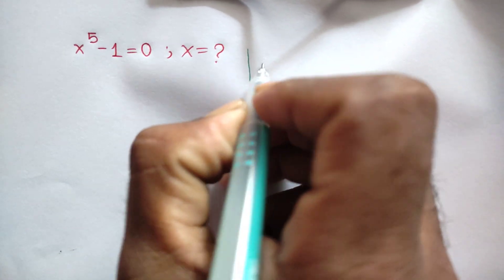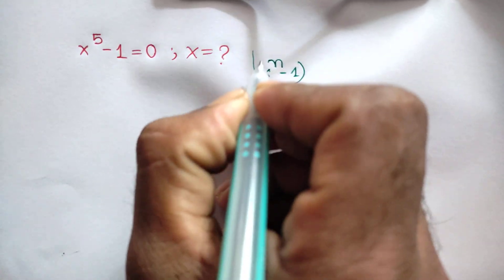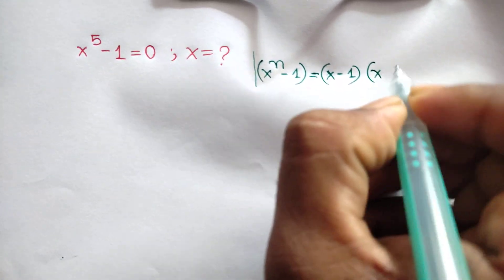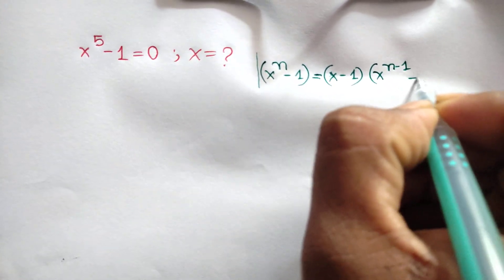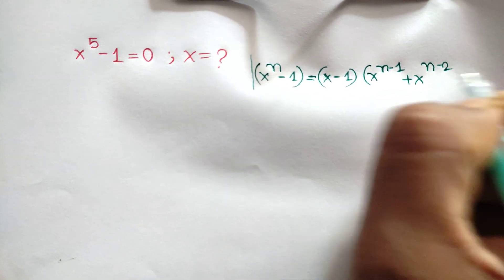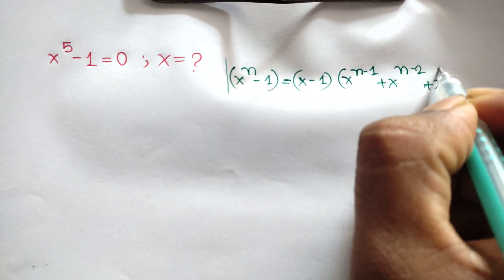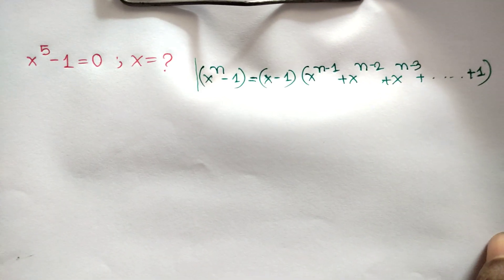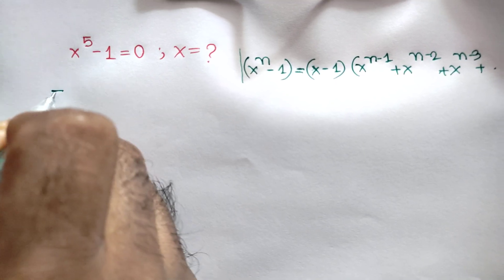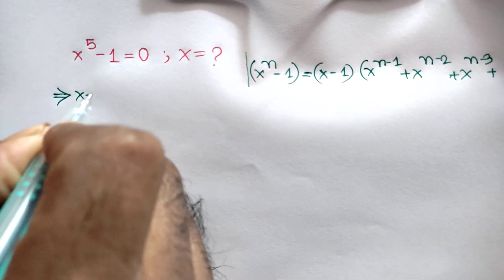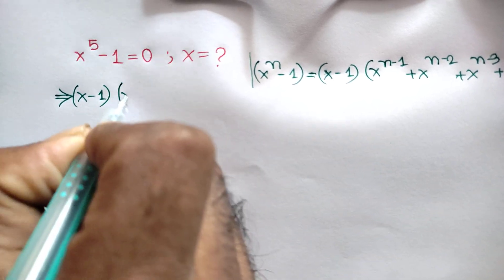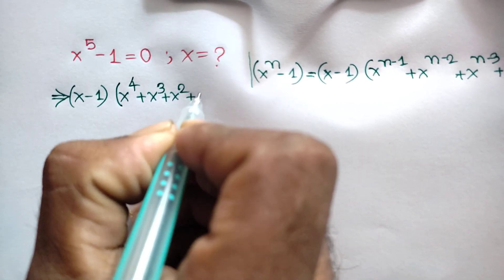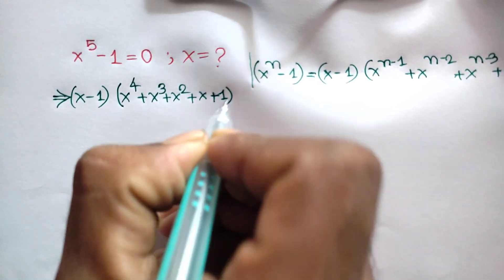We know that x to the power n minus 1 is equal to x minus 1 times x to the power n minus 1 plus x to the power n minus 2 plus x to the power n minus 3. So we can write here x minus 1 times x to the power 4 plus x to the power 3 plus x to the power 2 plus x plus 1 is equal to 0.